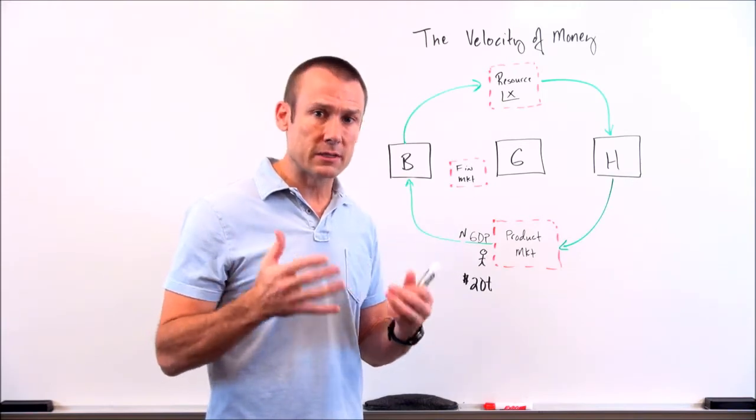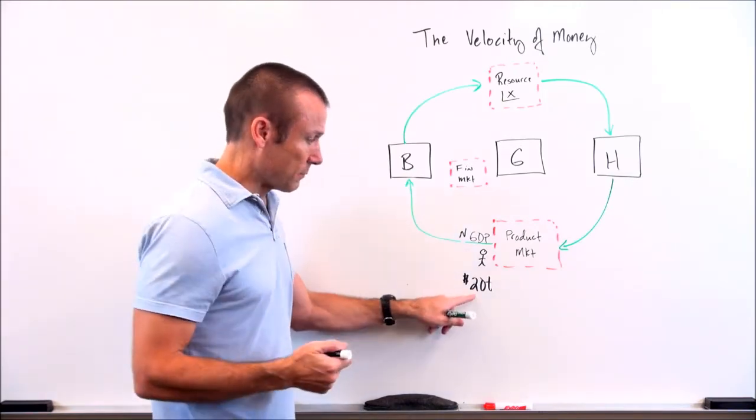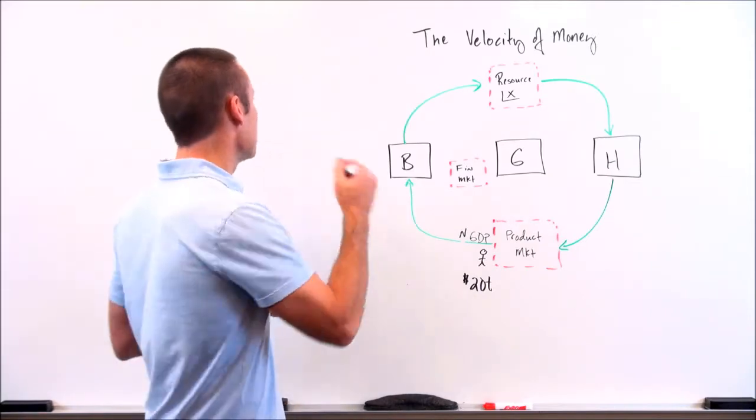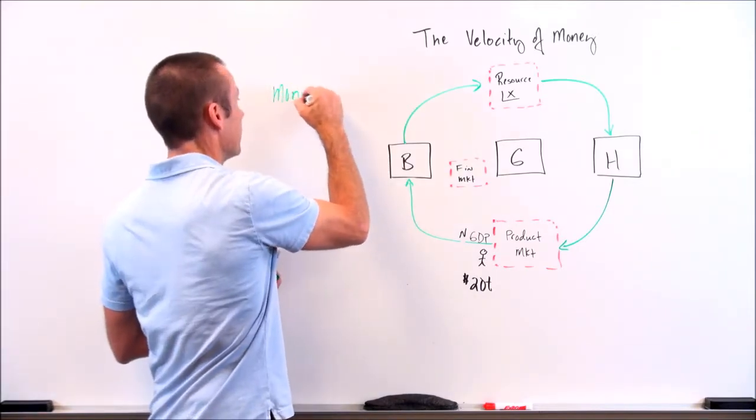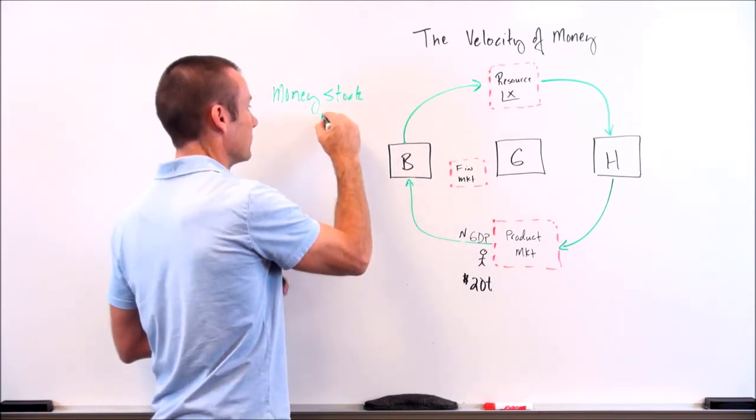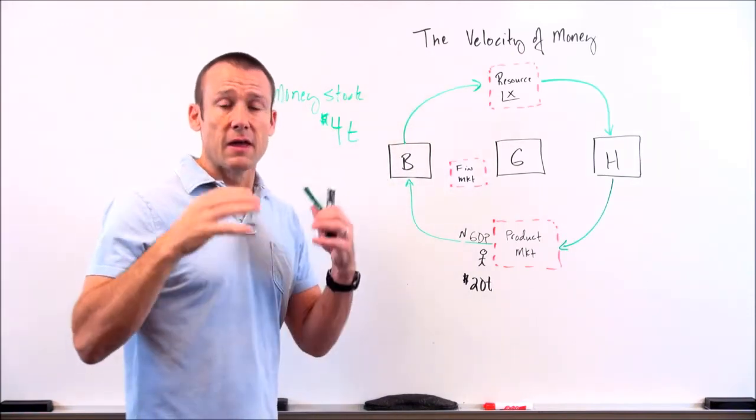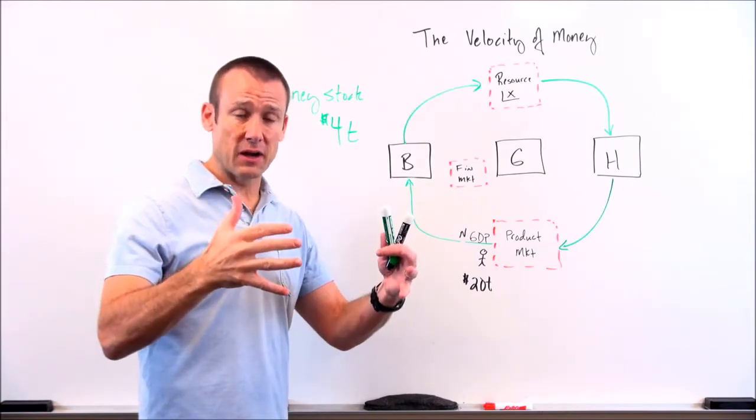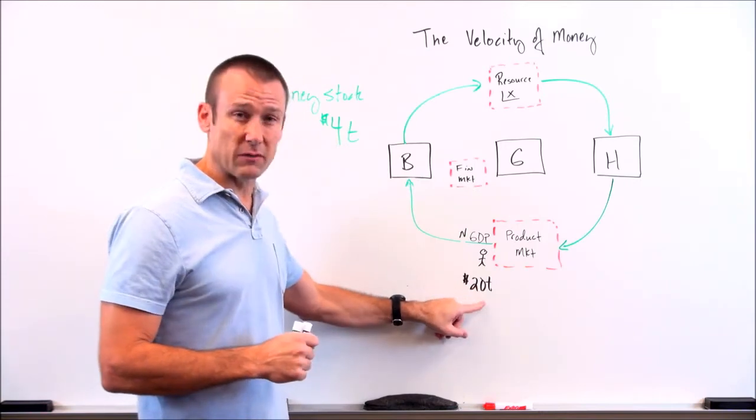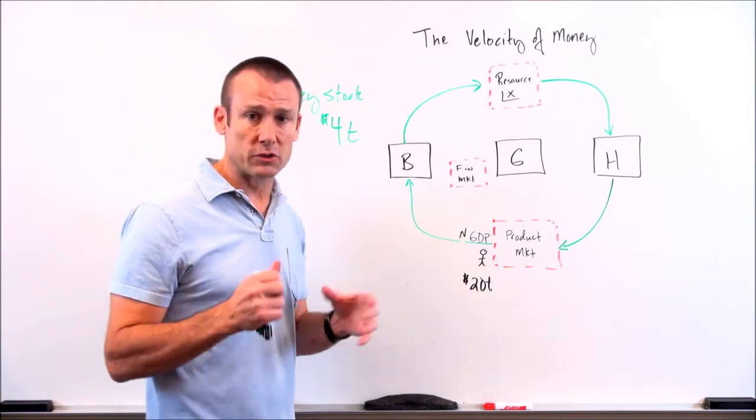What would that mean for our money stock? Well, if nominal GDP is $20 trillion, the velocity of money is five, our money stock would be $4 trillion, $4 trillion. Once again, average dollar gets spent five times in a year. So five times at $4 trillion, that would give us our nominal GDP, which is $20 trillion.